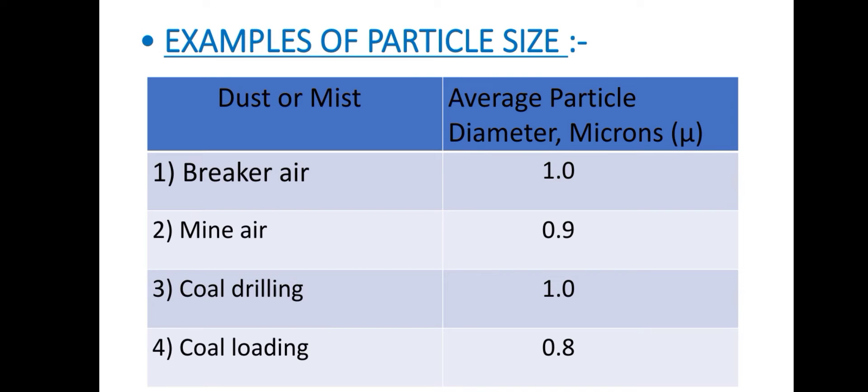Now here are some of the examples of particle size for dust or mist. First one is breaker air, its average particle diameter is 1.0 micron. Then second one is mine air, 0.9 micron. Third one is coal drilling, 1.0 micron. Coal loading, 0.8 micron.